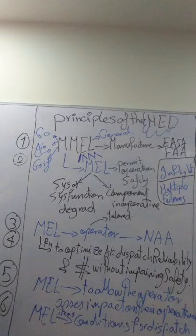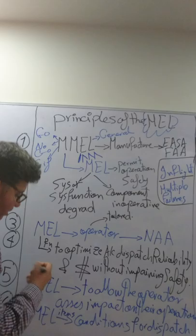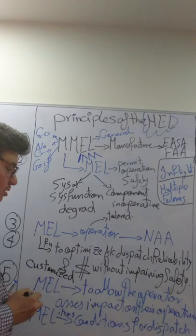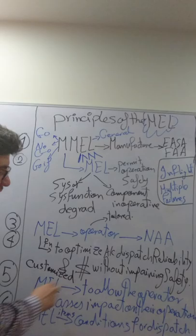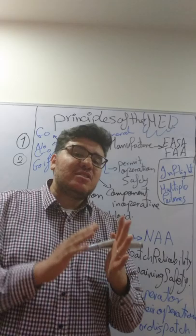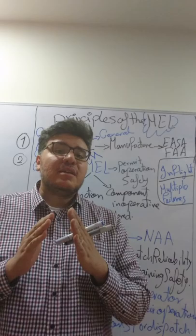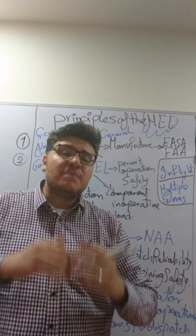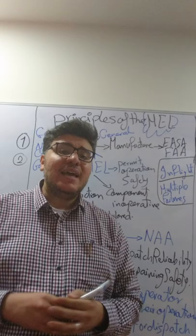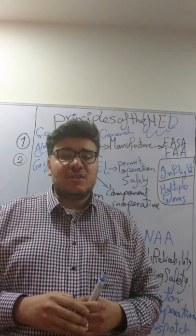Principle number five: the MEL, or Minimum Equipment List, which we call customized or tailored, is designed to allow the operator to assess the impact on their operation. This is the difference between the Master Minimum Equipment List and the customized MEL. The MEL allows the operator to assess its operation, environmental conditions, and local regulations against the MMEL and tailor its customized MEL. The customized MEL must be as restrictive as, or more restrictive than, the Master Minimum Equipment List.